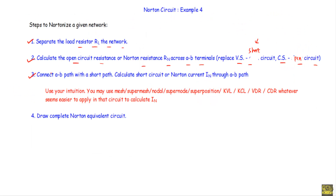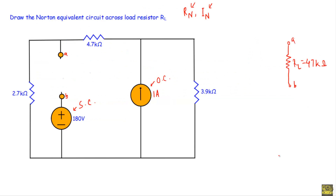Next, we will connect the A-B path with a short circuit and calculate the Norton current IN through that path. This is our circuit — we will connect the A-B path with a short circuit, and the current flowing through this path will be our Norton current. From the simulation, the Norton current equals 366 milliamperes.